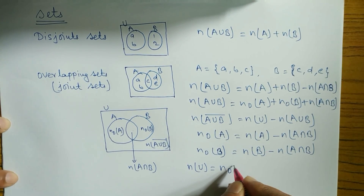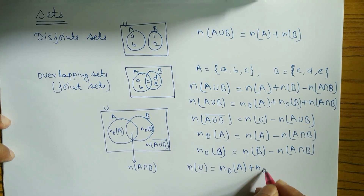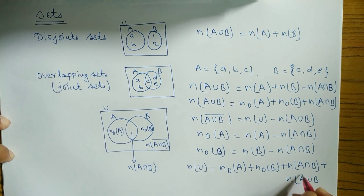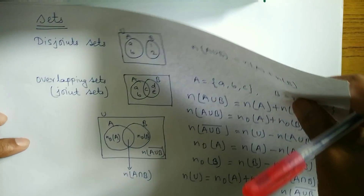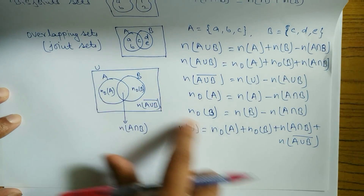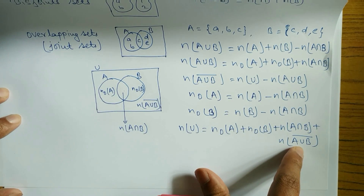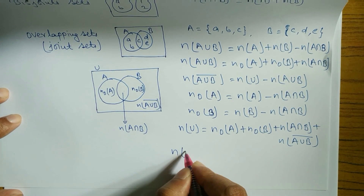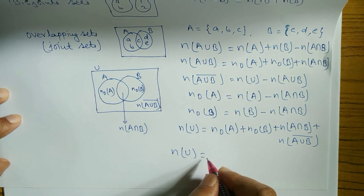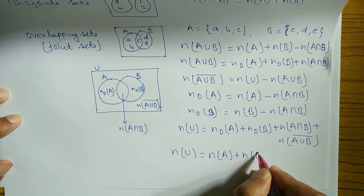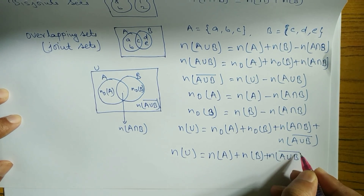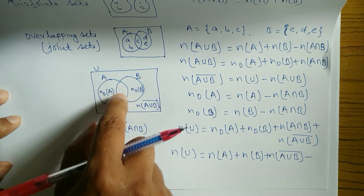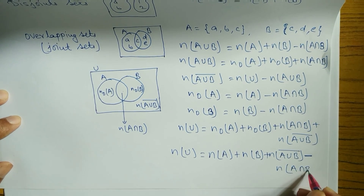There are two formulas for n(U). First: n(U) = n(only A) + n(only B) + n(A∩B) + n(A∪B) complement — adding each part of the diagram gives the total. Second: n(U) = n(A) + n(B) − n(A∩B) + n(A∪B) complement. When using n(A) and n(B) rather than 'only', you must subtract n(A∩B) once.